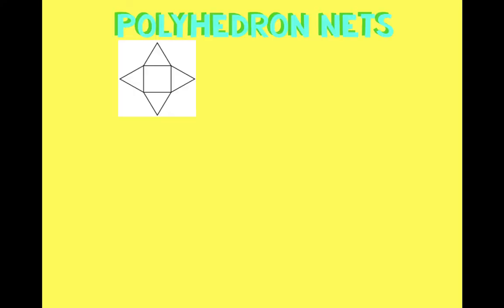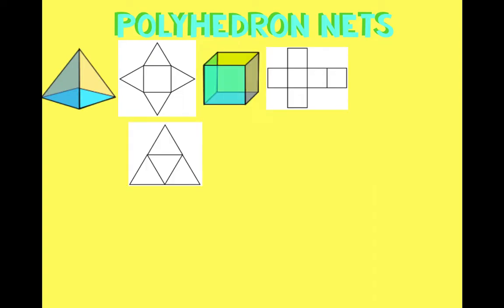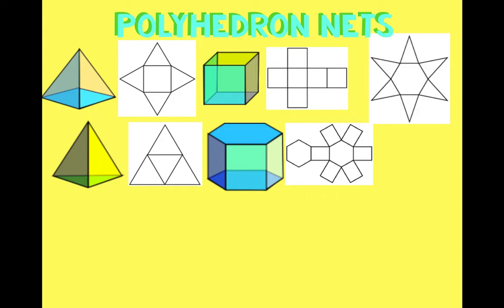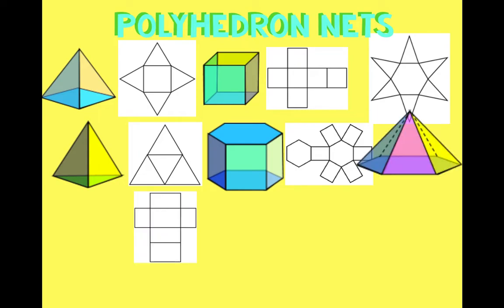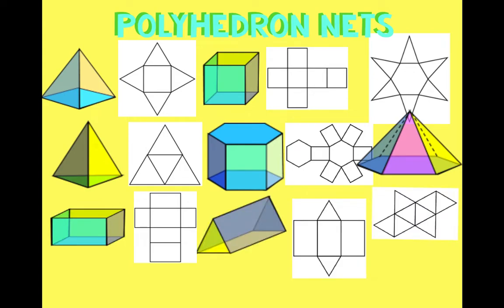Net number one: square-based pyramid. Number two: cube. Number three — fold these up — tetrahedron. Number four — six sides, fold this up — hexagonal prism. Number five is a pyramid because you're folding these upward, so it's a hexagonal pyramid. Number six: cuboid. Number seven: triangular prism. And the last one has eight faces — octahedron.